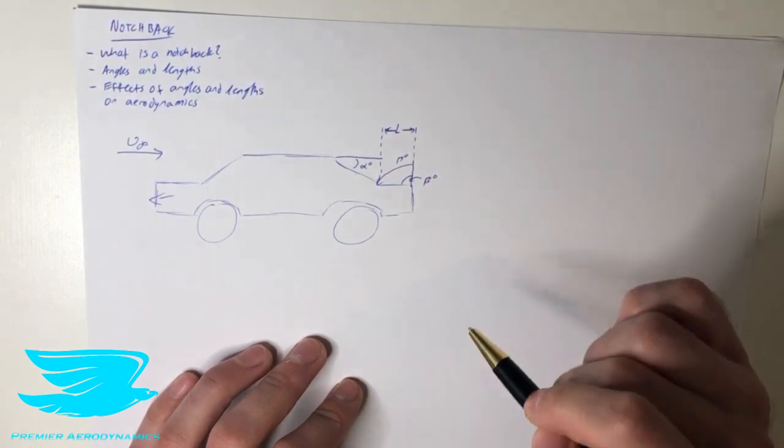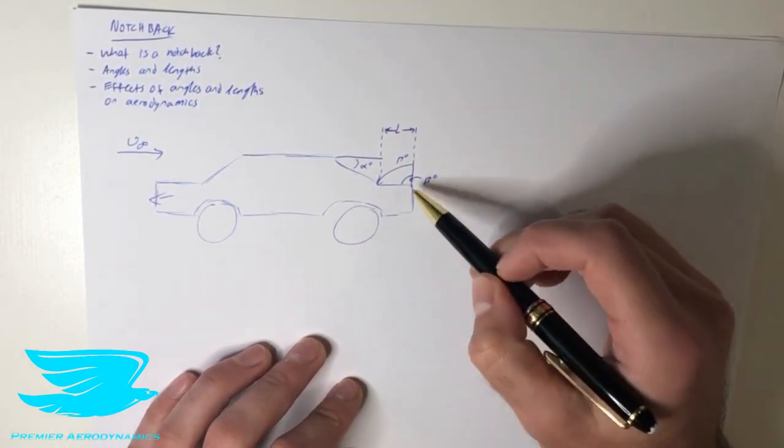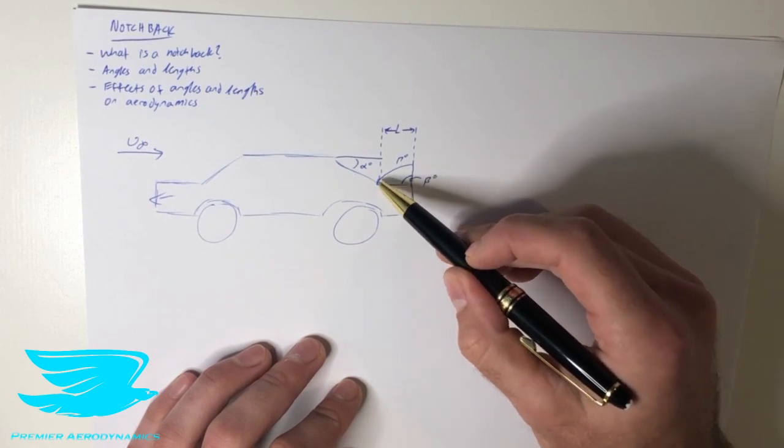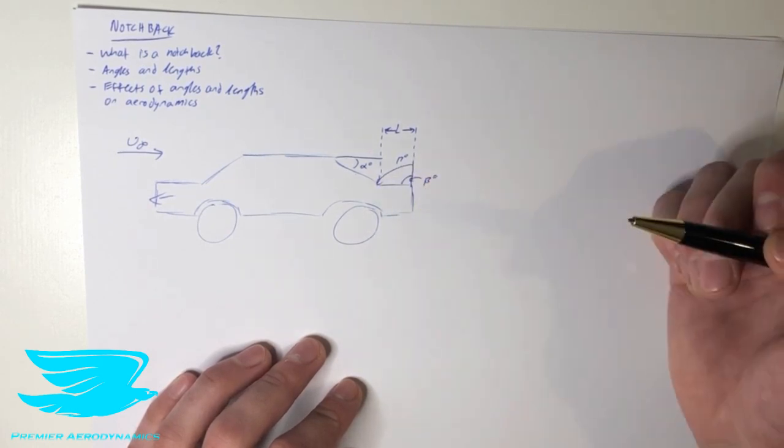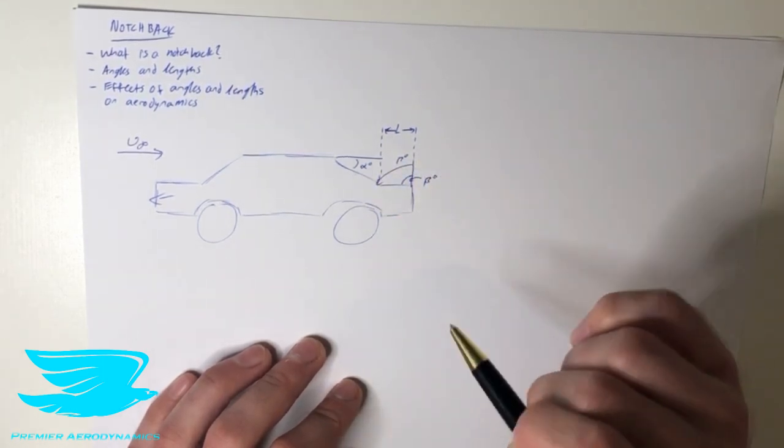However, there are additional angles as well. So we have the angle of the boot lid, or the trunk lid. We also have the angle of the back window, or the backlight, to the back of the car. So these are all very important geometry, as we'll go through in a second.